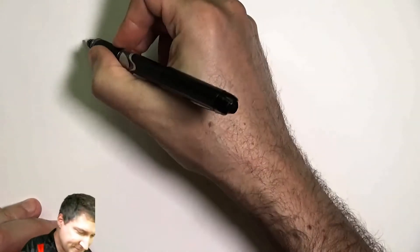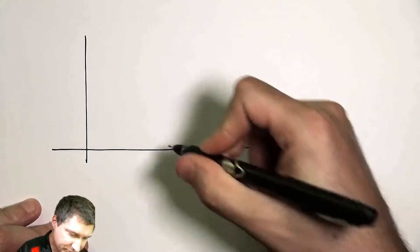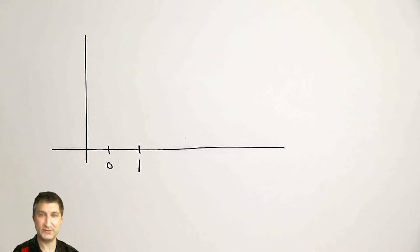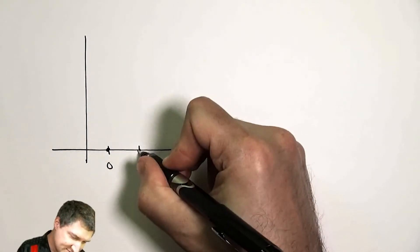So my new PMF looks like, well, the probability of getting zero is exactly zero. The probability of getting one is exactly zero, because I know that those things can't occur.